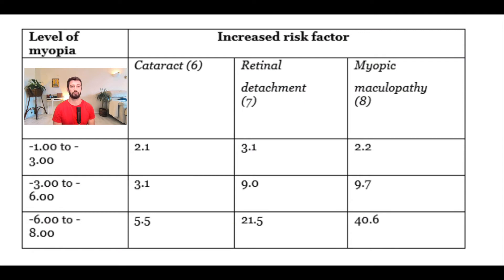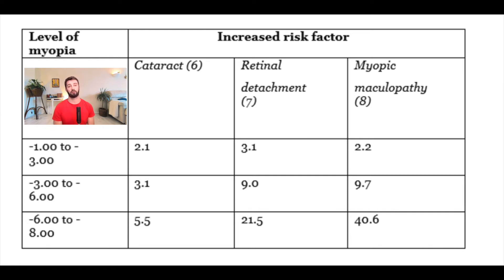Here's a table taken from an article — the link is below. The left column shows the level of myopia: the first row is minus one to minus three, the second is minus three to minus six, and the third is minus six to minus eight diopters. I used to be at minus two. On the right-hand side are increased risk factors by condition: cataracts, retinal detachment, and myopic maculopathy. For example, at minus five you'd be three times more likely to get cataracts, nine times more likely to get retinal detachment, and almost ten times more likely to get myopic maculopathy.